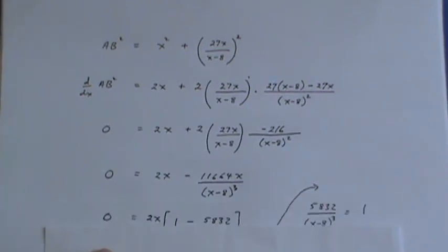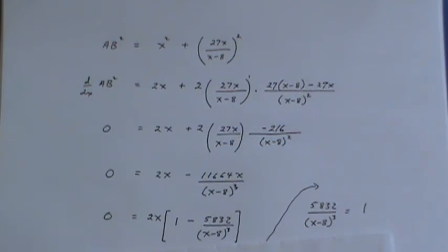And at this point I factored out 2x. Now either x is 0 which gives me a 0 derivative or else this expression right here is equal to 1 because that would give me a 0 for the bracket.